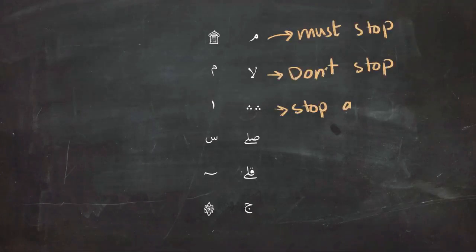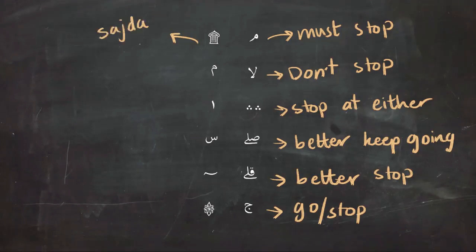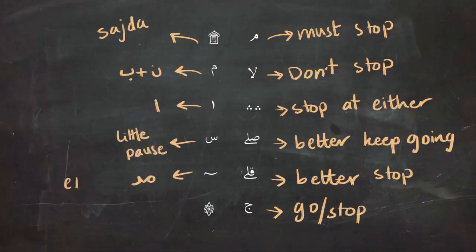So these were the 12 signs that you are going to see in the Quran. Here I'm going to give a quick summary of what these signs mean. Try to remember them, and of course the best way to learn them is by reading a lot of Quran because practice makes perfect.